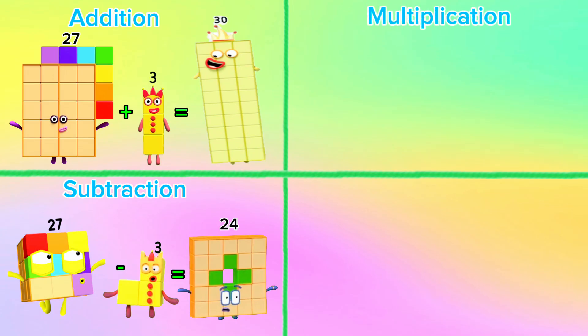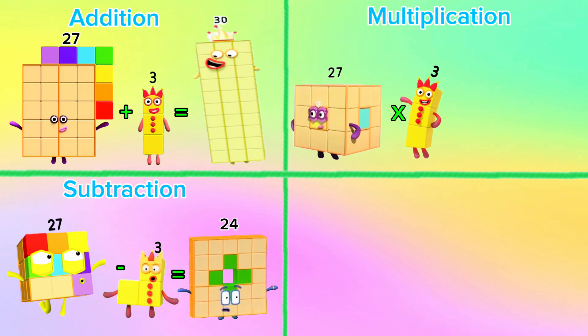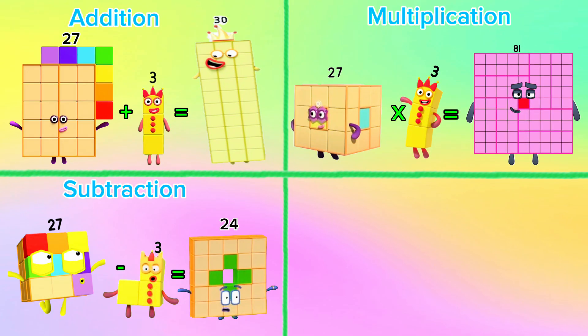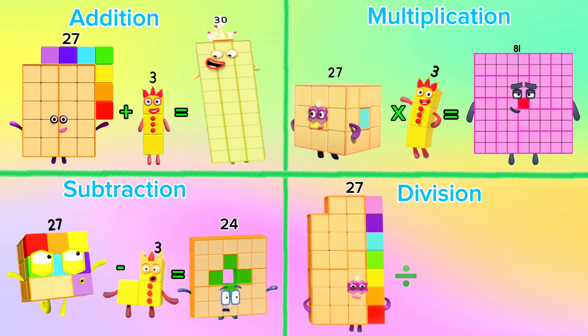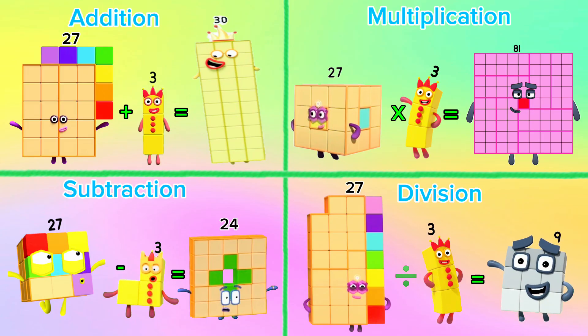27 plus 3 is equals to 30. In subtraction, 27 minus 3 is equals to 24. In multiplication, 27 multiplied by 3 is equals to 81. And in division, 27 divided by 3 is equals to 9.